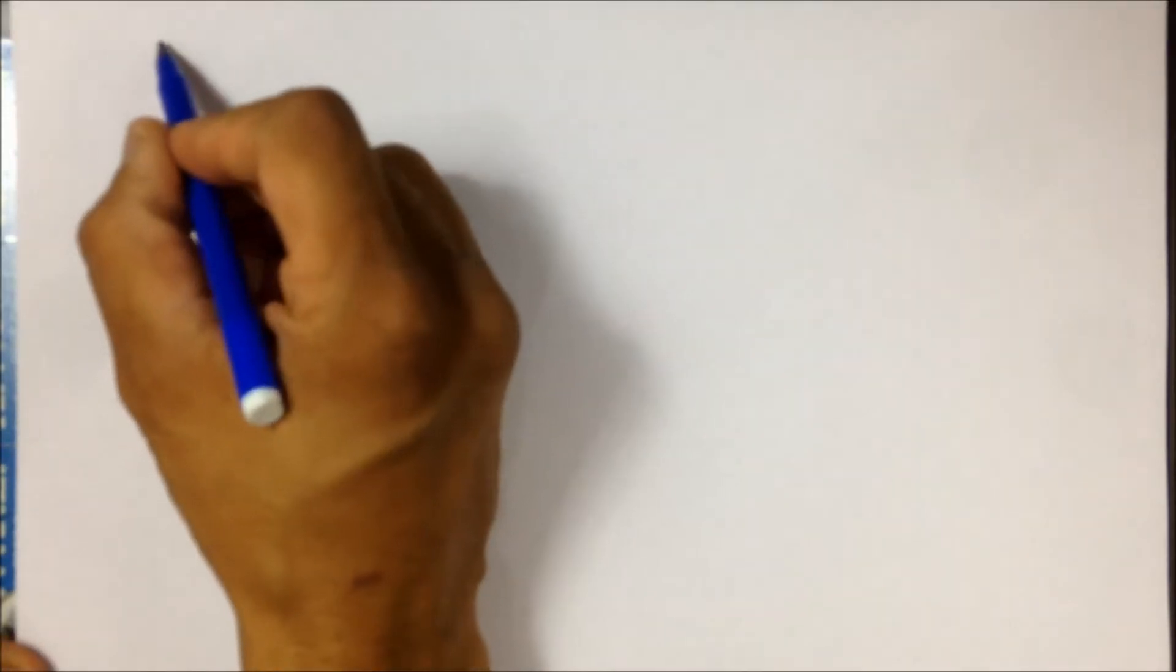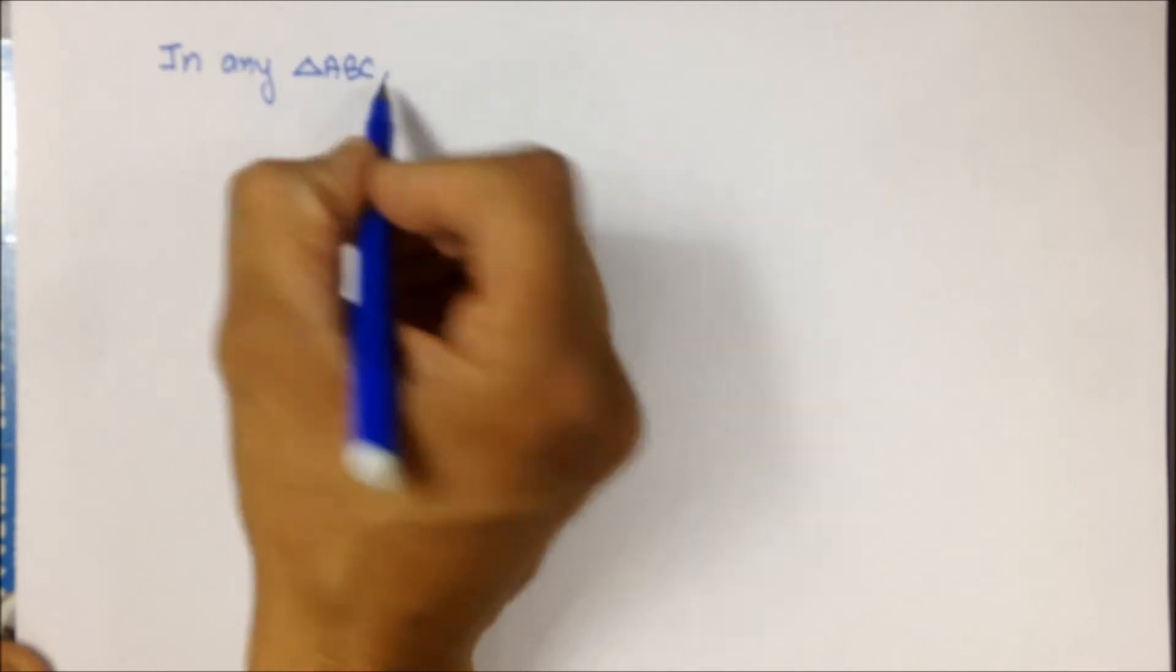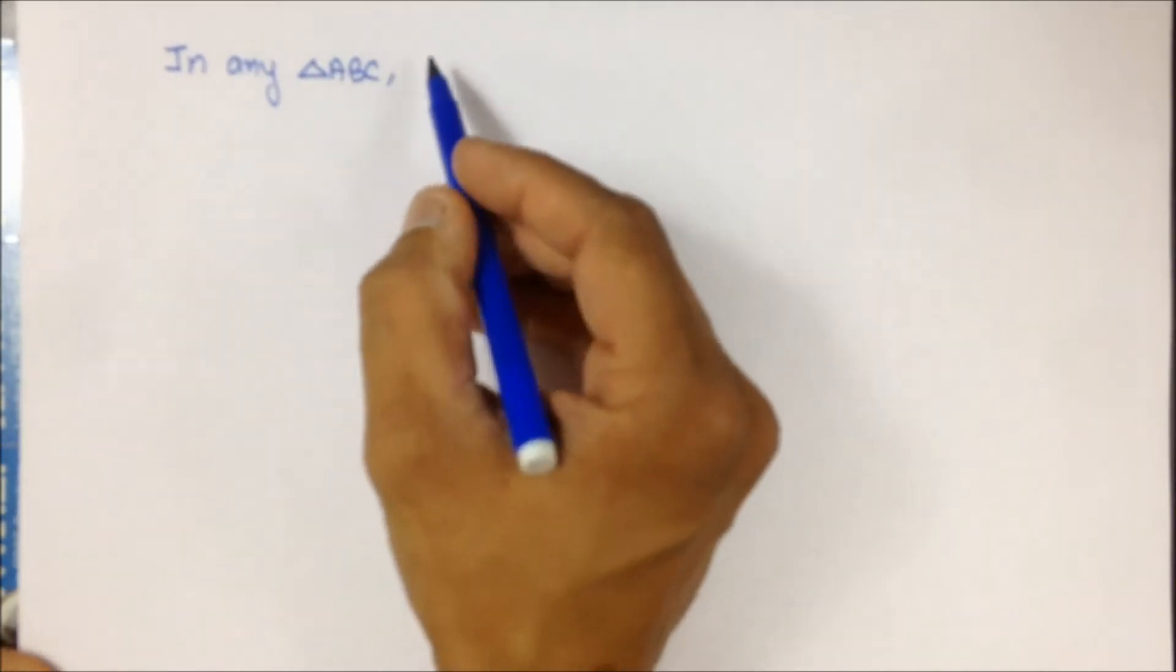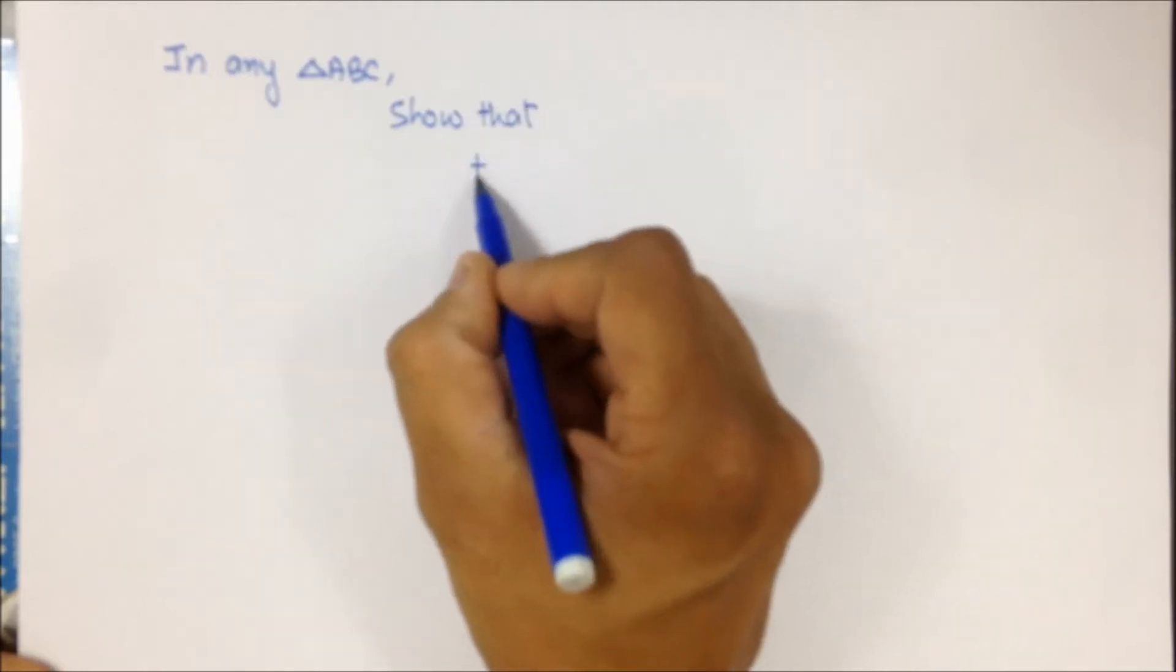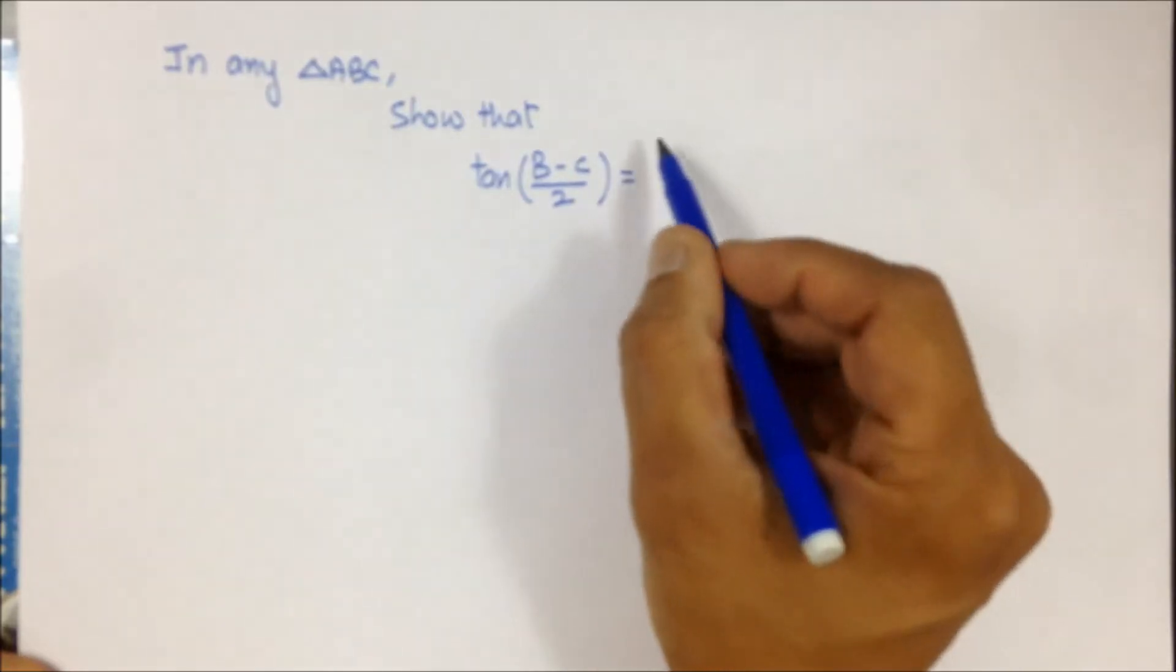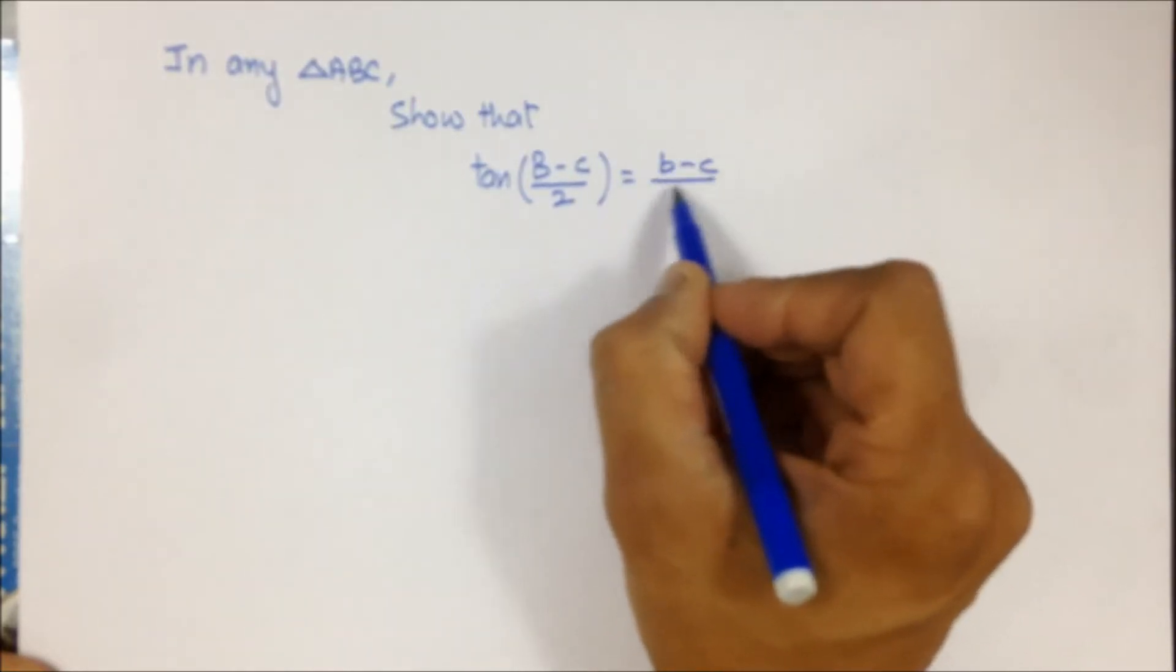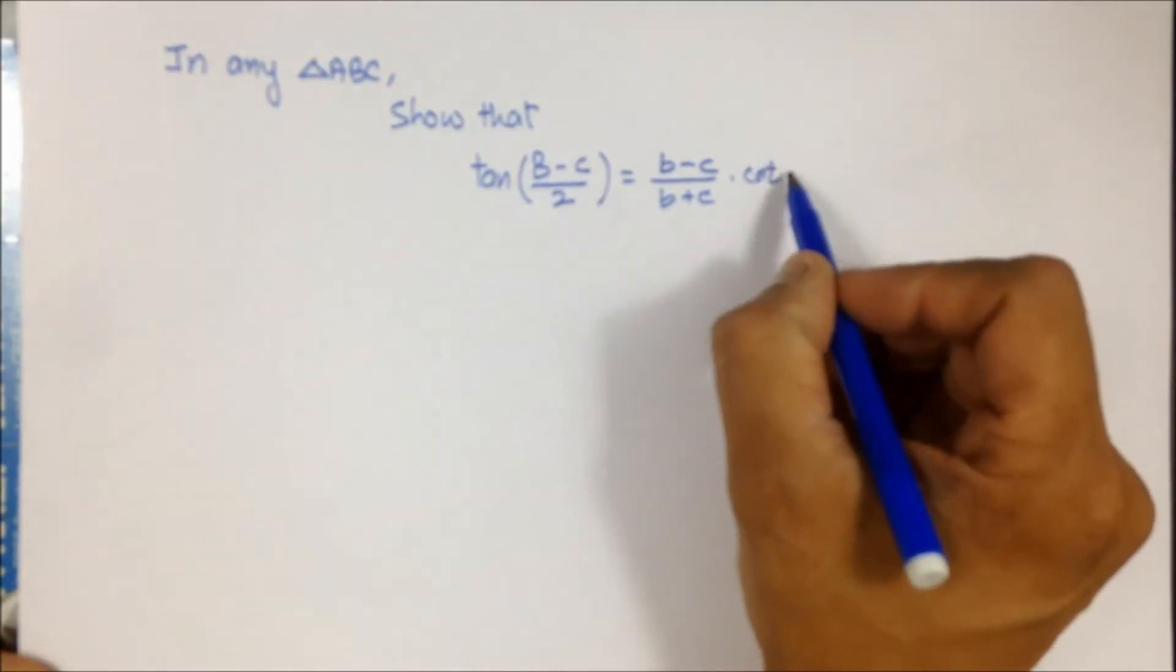Hello, welcome to the questions on sine law and cosine law. In the series we are taking another question. The question says: in any triangle ABC, show that tan((B-C)/2) equals (b-c)/(b+c) times cot(A/2).